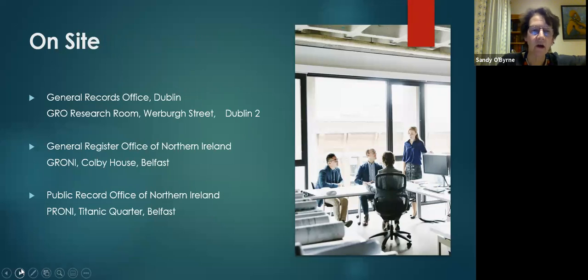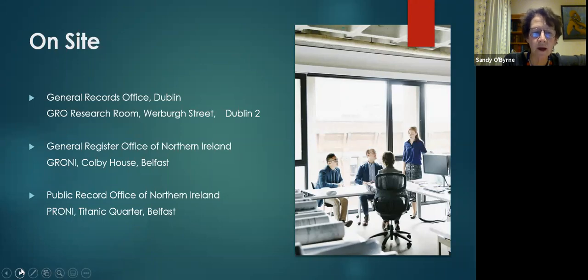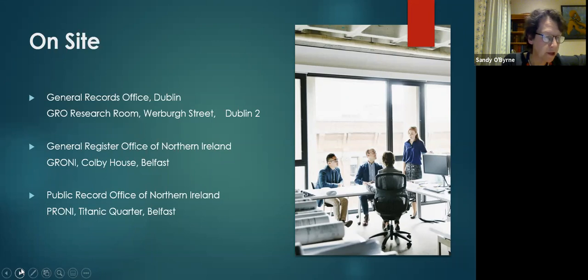Starting with on-site access: civil records in Dublin are held by the General Register Office in Werber Street in Dublin. You take the index books off the shelves, look for the person you want, and get a photocopy of their birth, marriage or death record. The General Register Office in Northern Ireland and the Public Record Office in Northern Ireland are both located in Belfast, where records are digitalized and you search on screen. What you get is a record — it is in no sense a certificate for birth, marriage or death. It is a record of the event for research purposes.